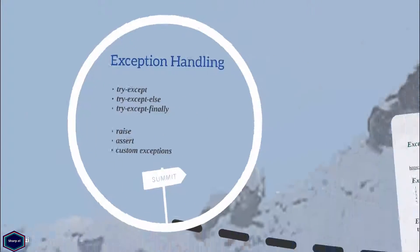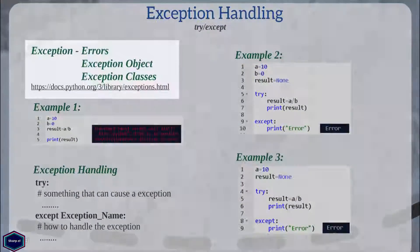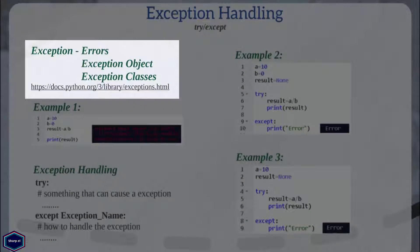Let's start by defining exceptions. Exceptions are unexpected events that occur during the execution of a program and disturb the normal flow of instructions. In Python, exceptions are defined in terms of classes, and when an unexpected error occurs, the Python interpreter creates an object of the appropriate exception class.